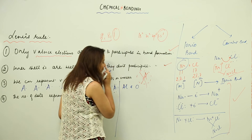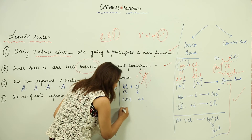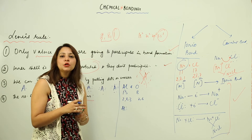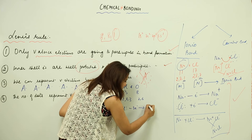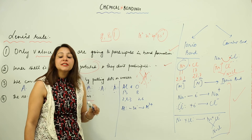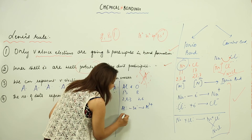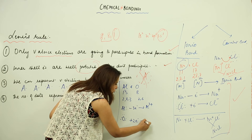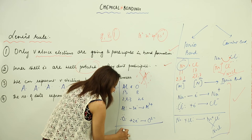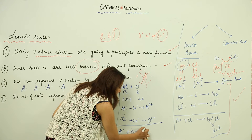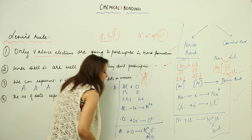One more example: forming a bond between aluminium and oxygen. Write the atomic number and configuration. Aluminium has three valence electrons, so it has to lose three electrons, acquiring a 3+ charge. The number of electrons an atom loses equals the positive charge it gets. Oxygen has six electrons; it is going to gain two electrons and form O²⁻. So aluminium forms Al³⁺ and oxygen forms O²⁻.